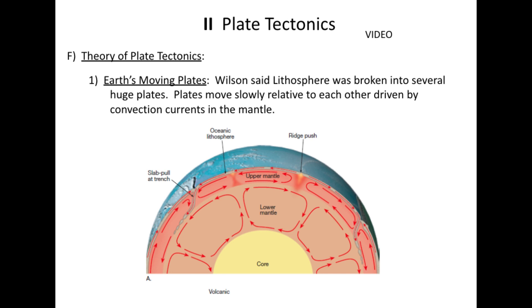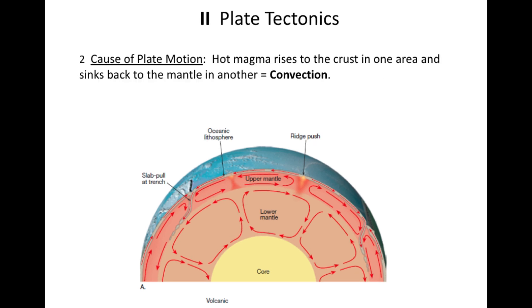Today we are going to talk about plate motion — what causes seafloor spreading and our tectonic plates to move, and what happens when the plates move and interact. We're going to bring full circle the theory of continental drift. Continental drift was really good evidence and a great idea, it just missed the mechanism. Today we're going to give a name to that mechanism: convection currents.